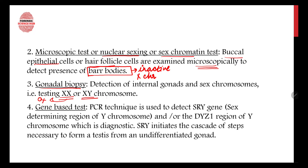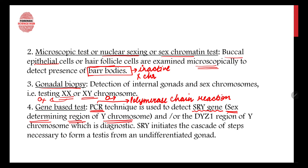Certain gene-based tests can also be done using the PCR technique — polymerase chain reaction. This technique is used to detect a gene called the SRY gene, whose full form is sex-determining region of the Y chromosome. This gene is present only in males. Another diagnostic region is the DYZ1 region of the Y chromosome. The SRY gene initiates a cascade of steps necessary for the formation of testes from an undifferentiated gonad.